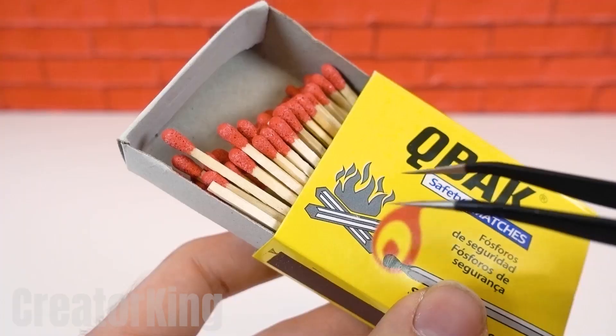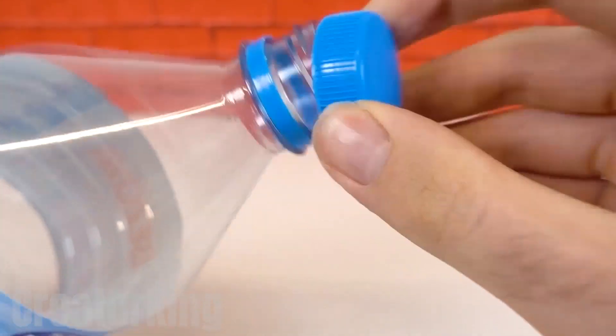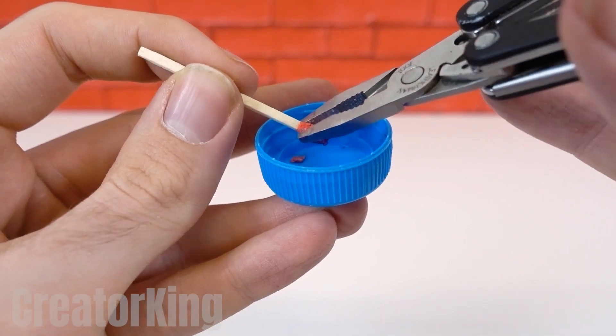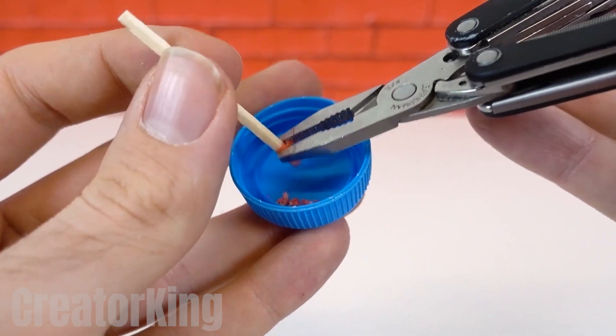Hi King Creator fans! How about we start off with what you came for? We'll need a screw cap like the one you see on the screen to store the magic powder made from the matches with the help of our powerful tweezers.